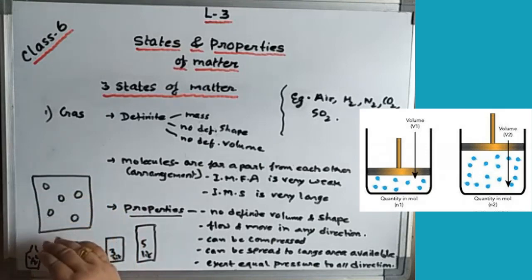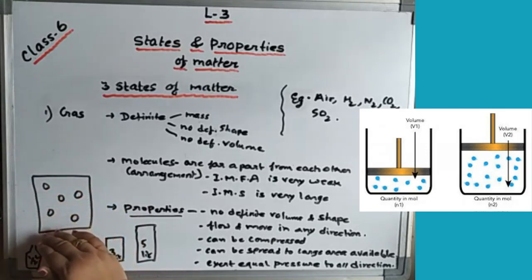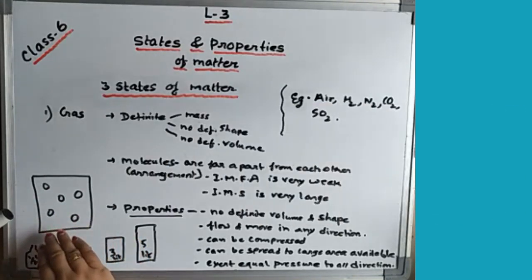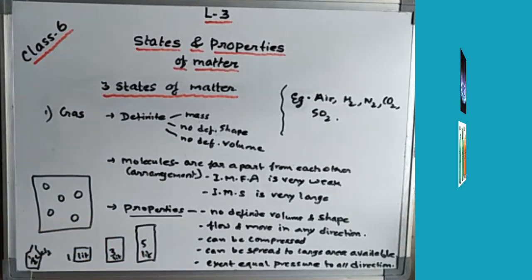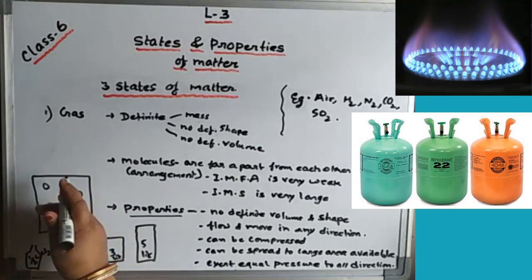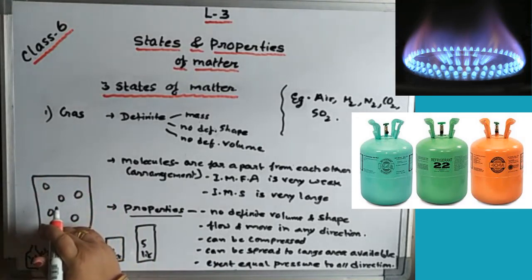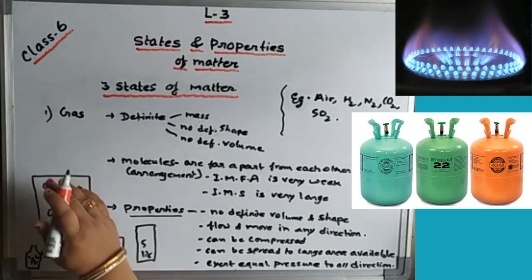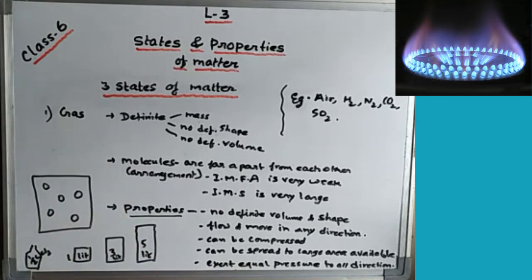When molecules are compressed and come closer, they reach the liquid state. This is why LPG gas in our kitchen cylinders is in liquid state under pressure. When pressure is applied, the molecules come closer and take the liquid state. But when the pressure is released, the gas returns to the gaseous state.